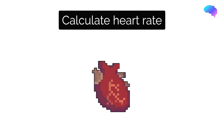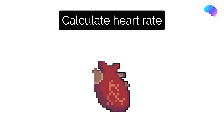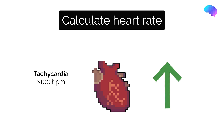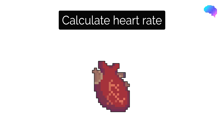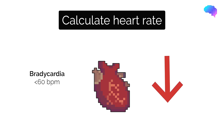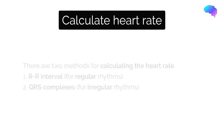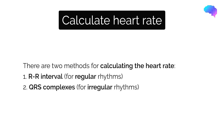The first step to our structured approach to ECG interpretation is to calculate the patient's heart rate. A normal heart rate is between 60 to 100 beats per minute. Tachycardia, or a fast heart rate, refers to a heart rate greater than 100 beats per minute. Bradycardia, or a slow heart rate, refers to a heart rate less than 60 beats per minute. There are two methods for calculating the heart rate and the choice depends on whether the patient has a regular or irregular heart rhythm.